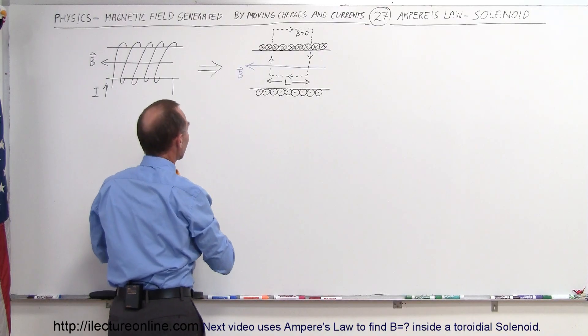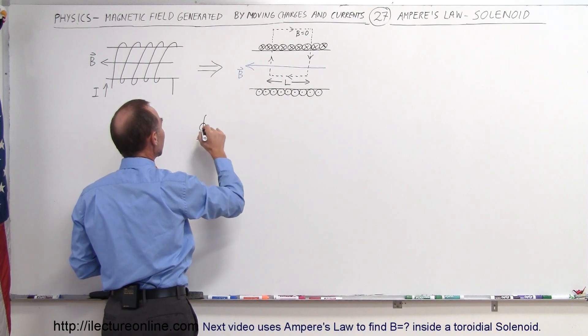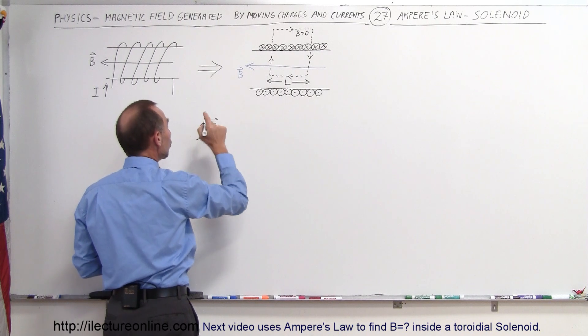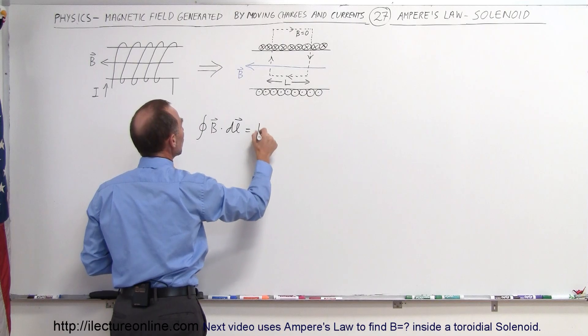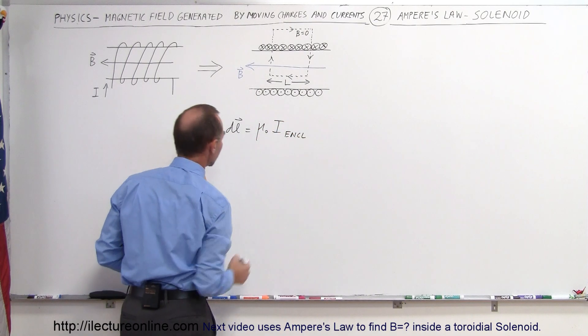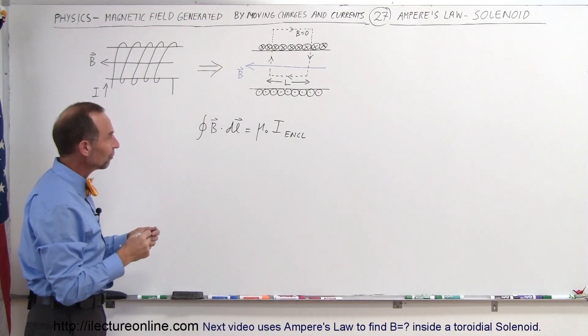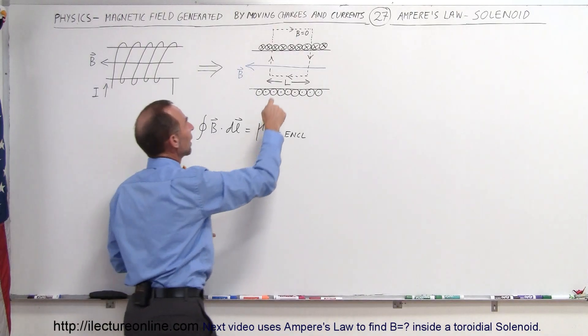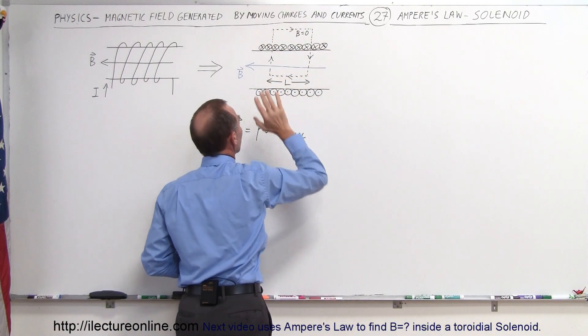That means we're going to use Ampere's Law that says that the closed-loop line integral of B dot dL is equal to μ₀ times I enclosed. So first we'll concentrate on the left part of that equation. We're going to integrate four times: from there to there, from there to there, from there to there, and from there to there.